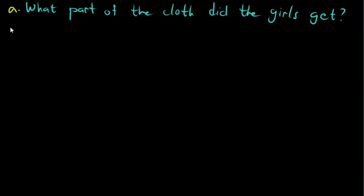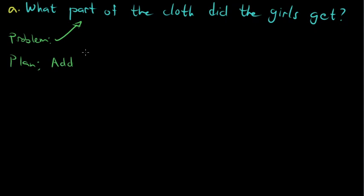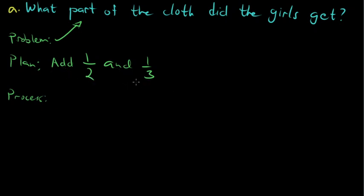What is my plan? I need to add the cloth taken by the two girls. Lila got one half and Nana got one third. That's the plan to answer the question: what part of the cloth did the girls get? Let's carry out that plan in the process. We need to add one half and one third. So we have one half plus one third.